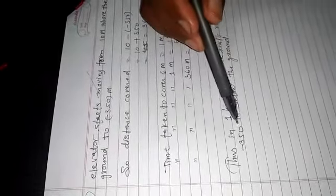Time taken to cover 6 meters equals 1 minute. Time taken to cover 1 meter equals 1 by 6 minutes. Time taken to cover 360 meters equals 360 by 6 equals 60 minutes, which equals 1 hour. Thus, in 1 hour, the mine shaft elevator reaches 350 meters below the ground. If we write 'below the ground,' no minus sign is needed; 350 meters below the ground means minus 350 meters — below the ground indicates the minus sign.